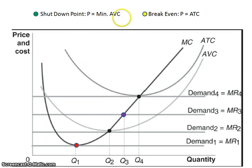And so when we're looking at the shutdown point, the formula that you see here is price equals minimum AVC. We can see that on the graph here at Q2. Our marginal cost curve, where it intersects the AVC curve, is at minimum AVC.